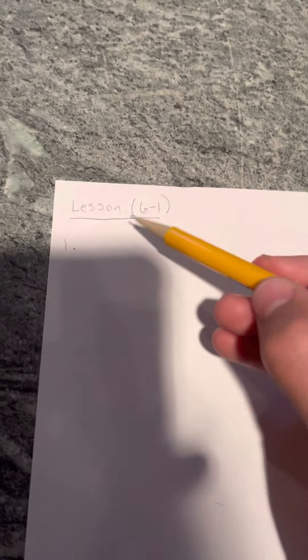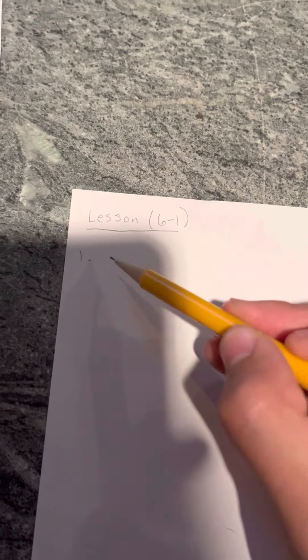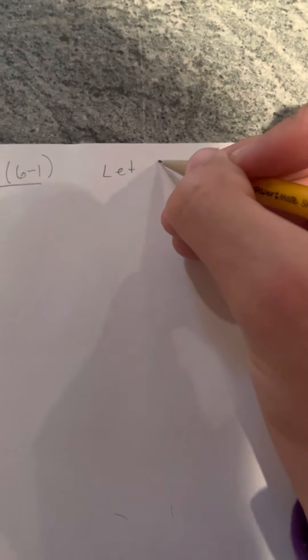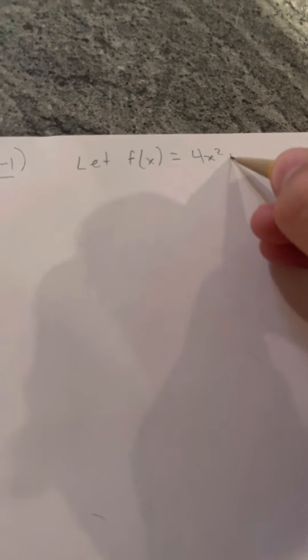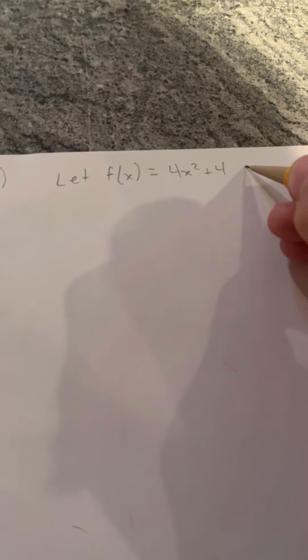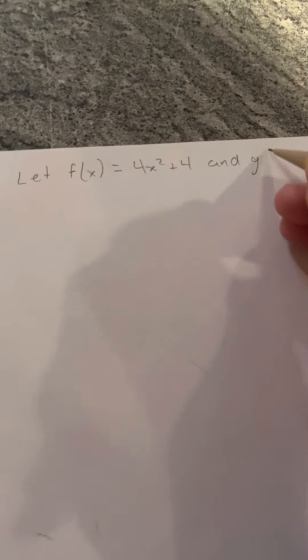Lesson 6-1, problem number 1. Let f(x) equal 4x squared plus 4, and g(x) equal 4x. First problem, we have to find f∘g.